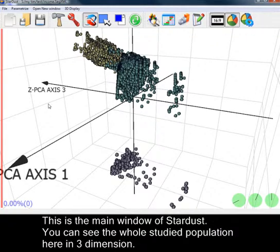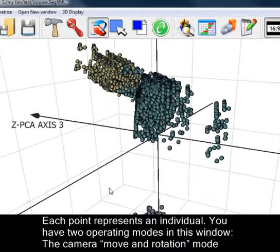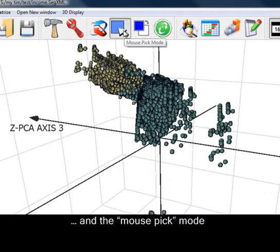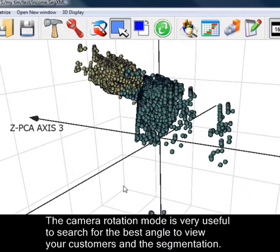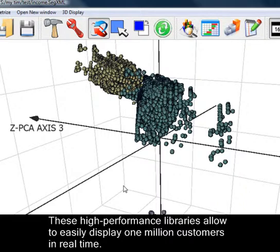This is the main window of Stardust. You can see the whole studied population here in three dimensions. Each point represents an individual. You have two operating modes in this window: the camera move and rotation mode, and the mouse pick mode. You can switch from one mode to the other by clicking the middle mouse button. The camera rotation mode is very useful to search for the best angle to view your customers and the segmentation. The rendering of the 3D display is performed using OpenGL libraries. These high performance libraries allow to easily display one million customers in real time.